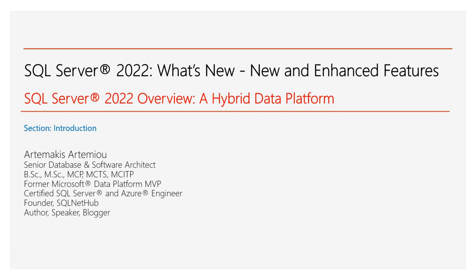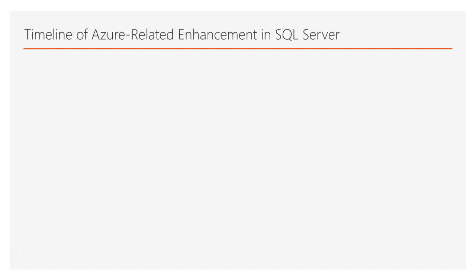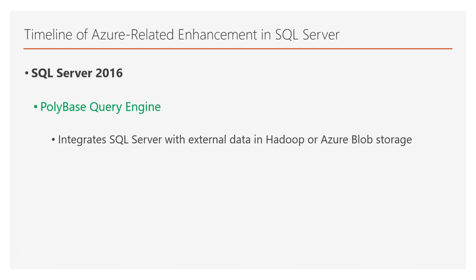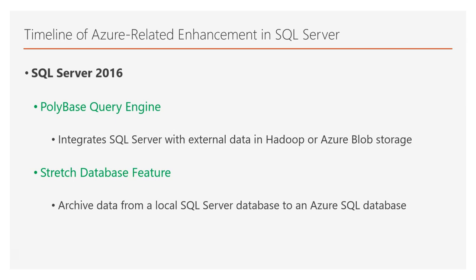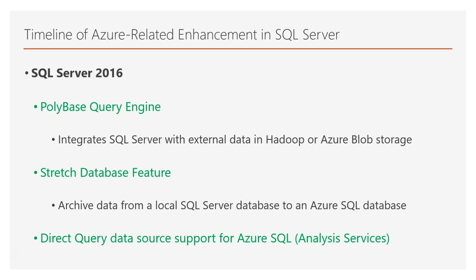First, in SQL Server 2016, there were some features that integrated SQL Server on-premises with Azure SQL Database. These features are the PolyBase query engine, which integrates SQL Server with external data in Hadoop or Azure Blob Storage, the Stretch Database feature, via which you can archive data from a local SQL Server on-premises database to an Azure SQL database, as well as direct query data source support for Azure SQL in Analysis Services.